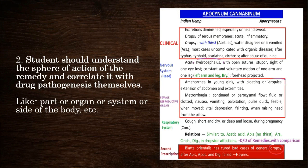You can see the arrangement of symptoms according to their priority in the image of Apocyanum Cannabinum: clinical indication on top of the remedy, after that the nervous system and part of it, then the female reproductive organ, then the respiratory system, then differential diagnosis of remedies with comparison, and at the end, second prescription.